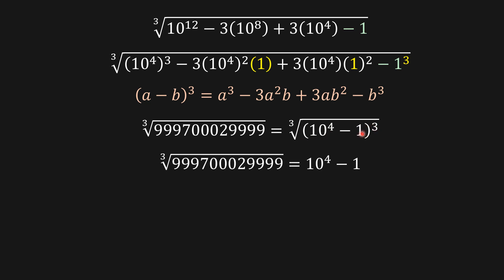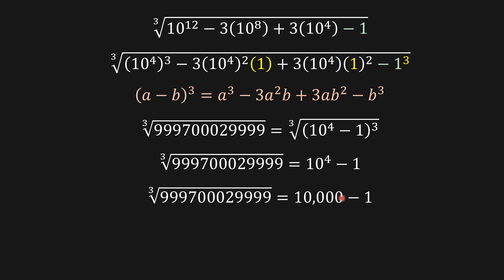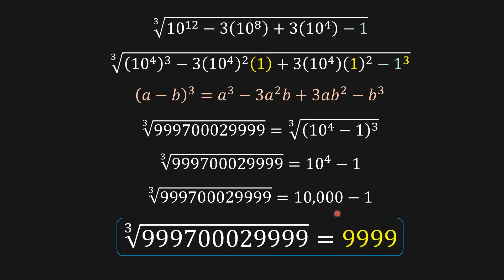So the cubic root of this number is the cubic root of (ten to the four minus one) to the power of three. We can cancel the cube and the cubic root, giving us ten to the four minus one, which is ten thousand minus one. So the cubic root of this number is nine thousand nine hundred and ninety-nine.